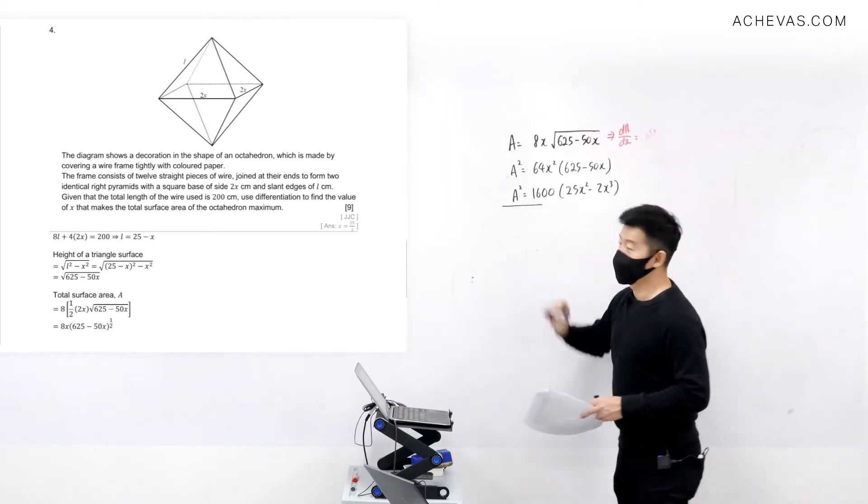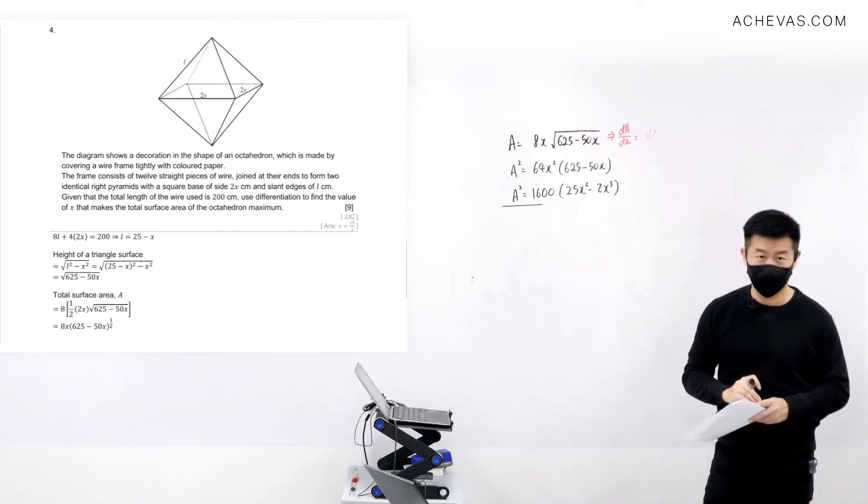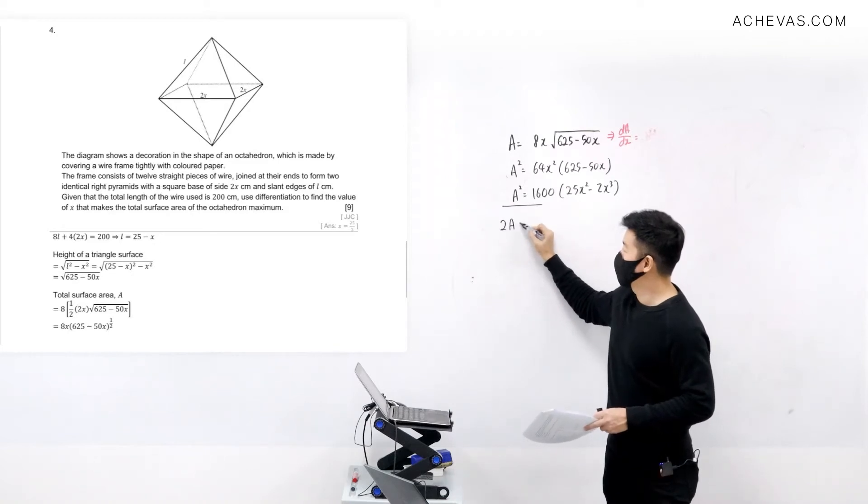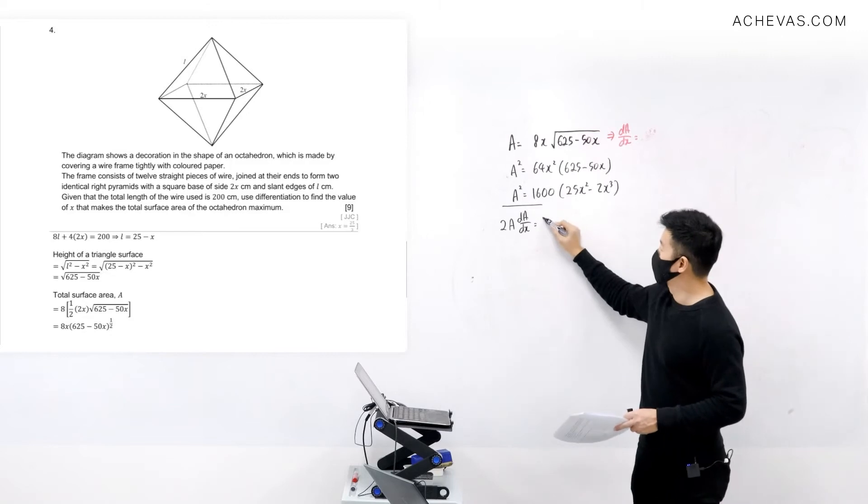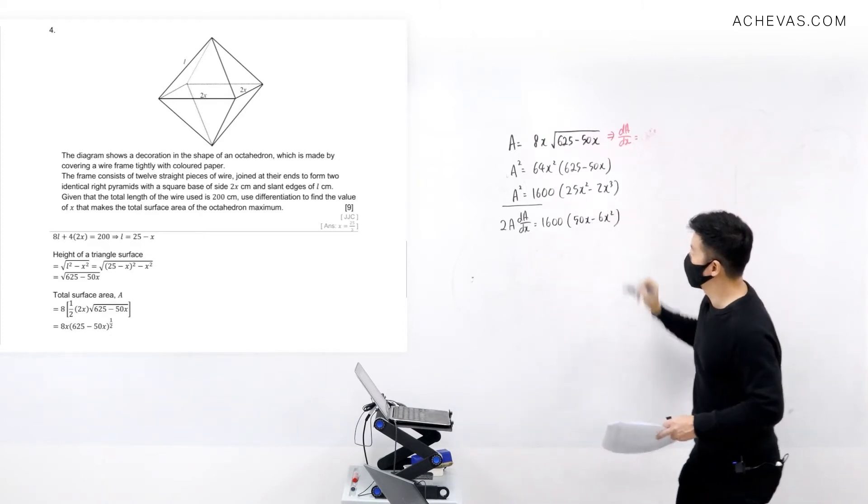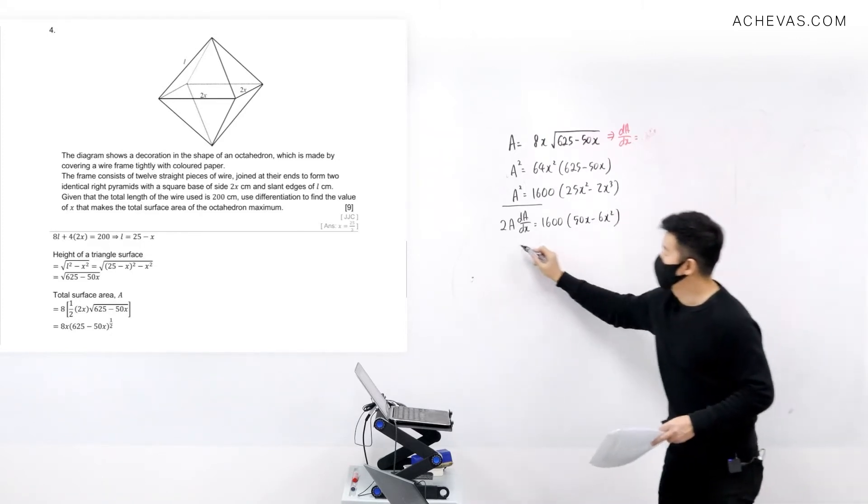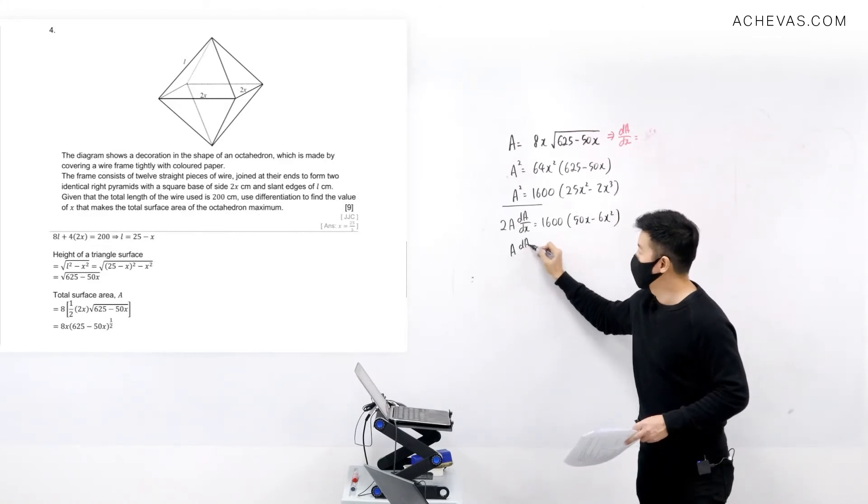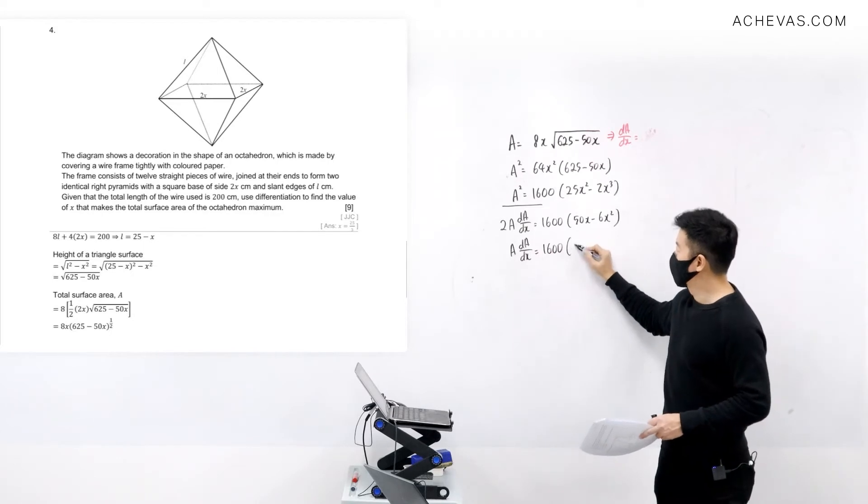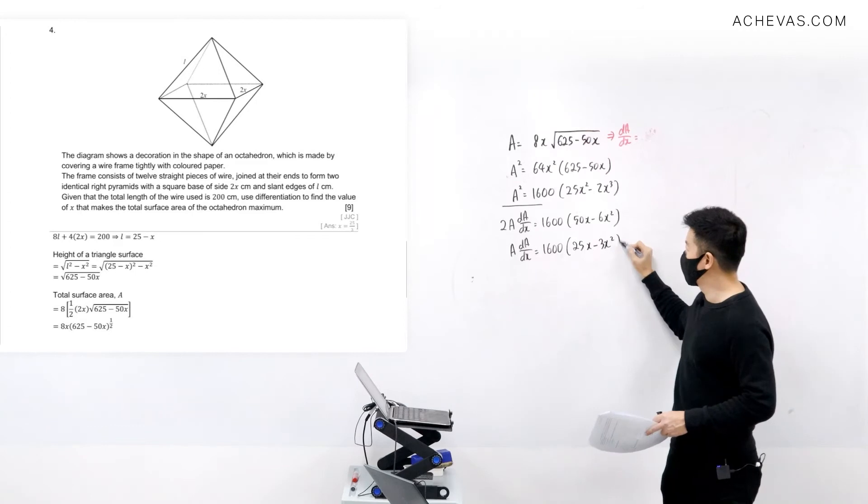From here, I'm going to differentiate it with respect to x - implicit differentiation. So differentiating this with respect to x, I will have 2A dA/dx = 1600(50x - 6x²), which means that A dA/dx = 1600(25x - 3x²).